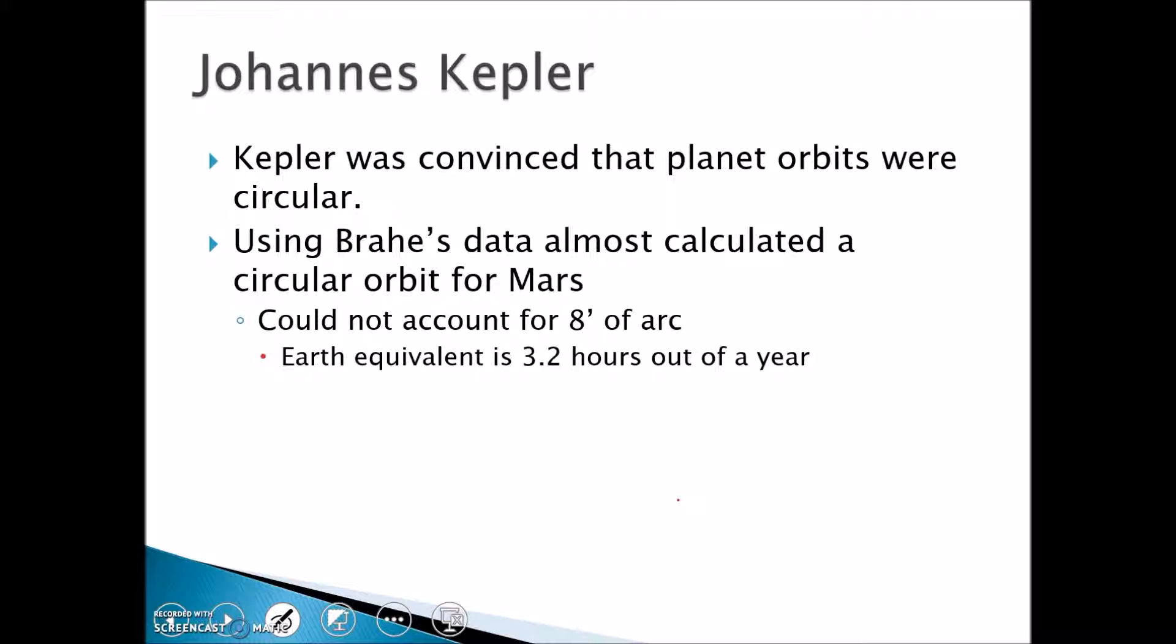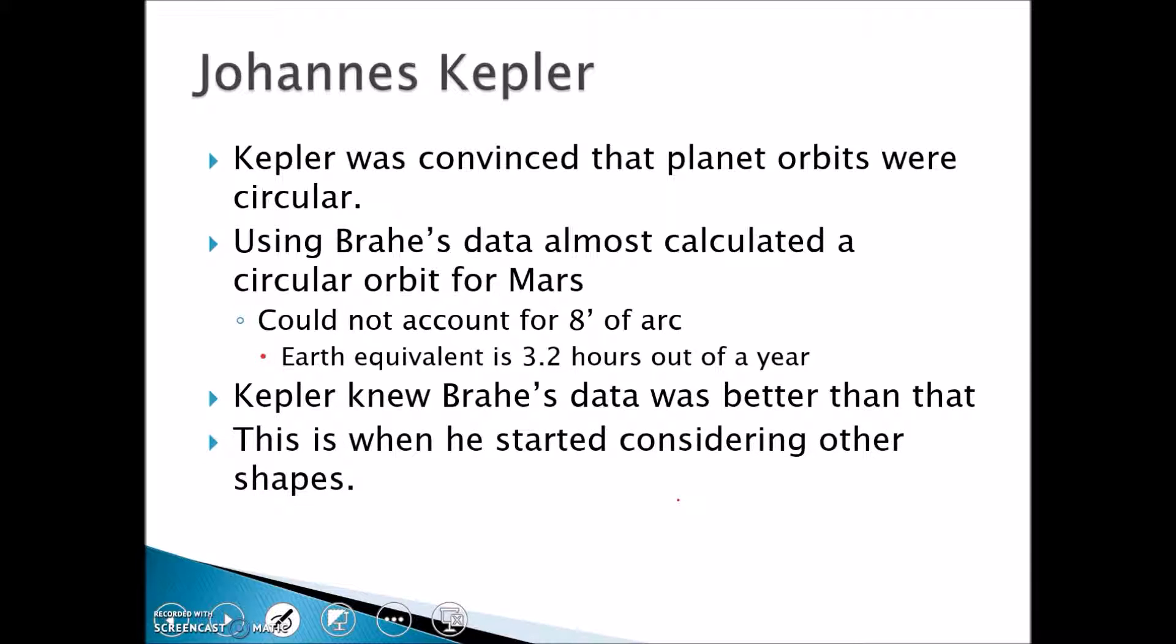For Mars, he was able to perfectly model Mars's orbit mathematically except for eight minutes of arc. Now eight minutes of arc is equivalent to a little over three hours in a year. Using Kepler's model, he could perfectly plot the position of the Earth around the sun except for three hours out of a year. That's pretty darn good modeling, but Kepler knew Brahe's data was better than that, so he gave up the idea of a circular orbit and started pursuing other shapes.